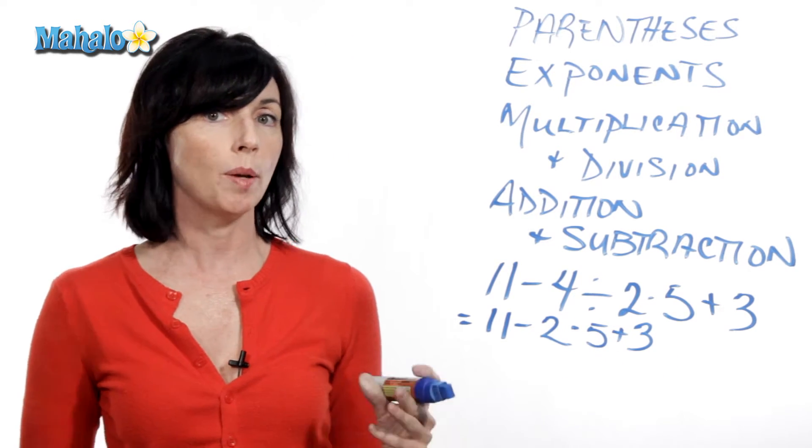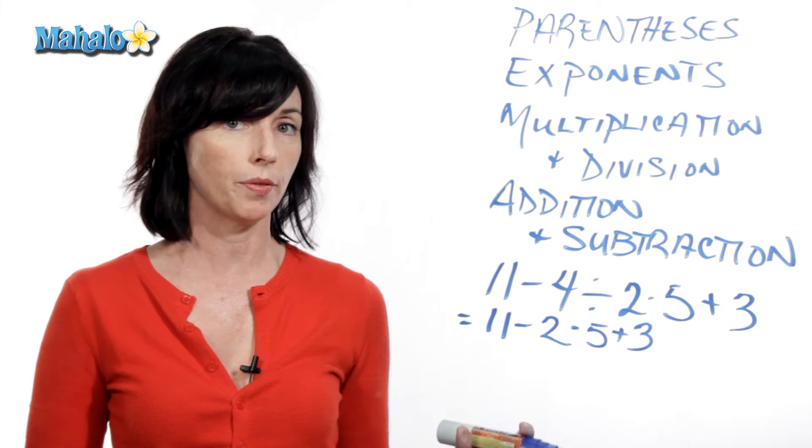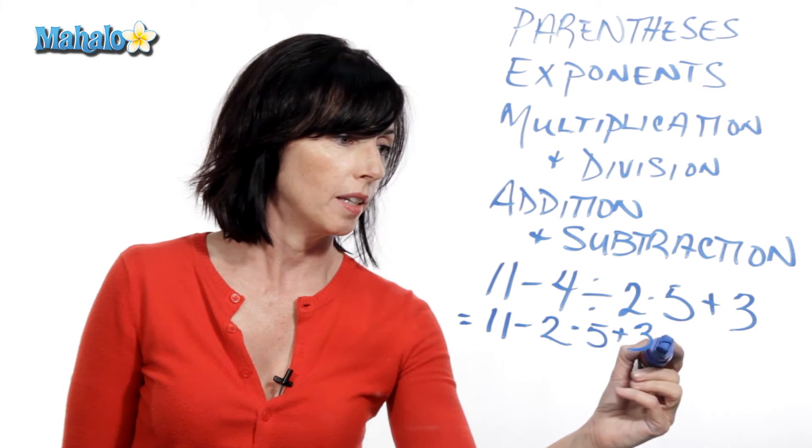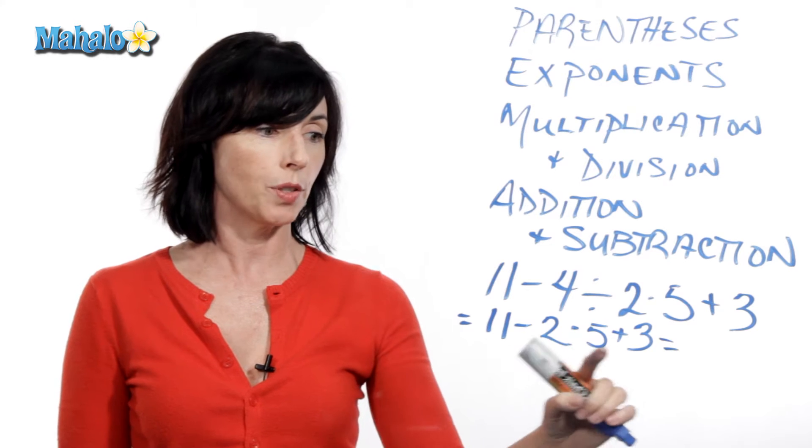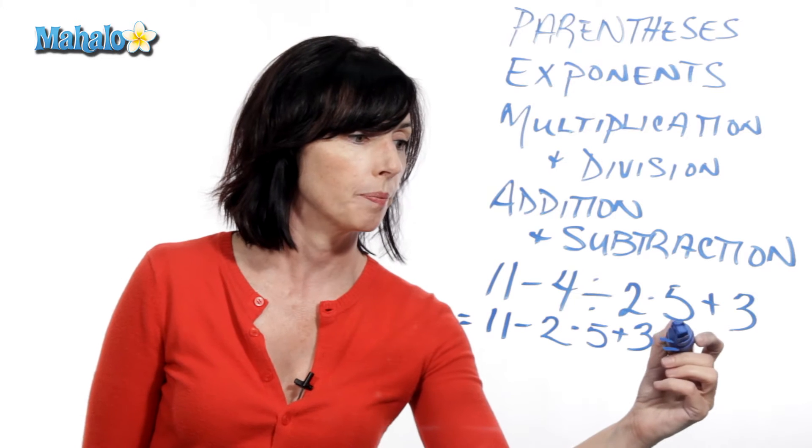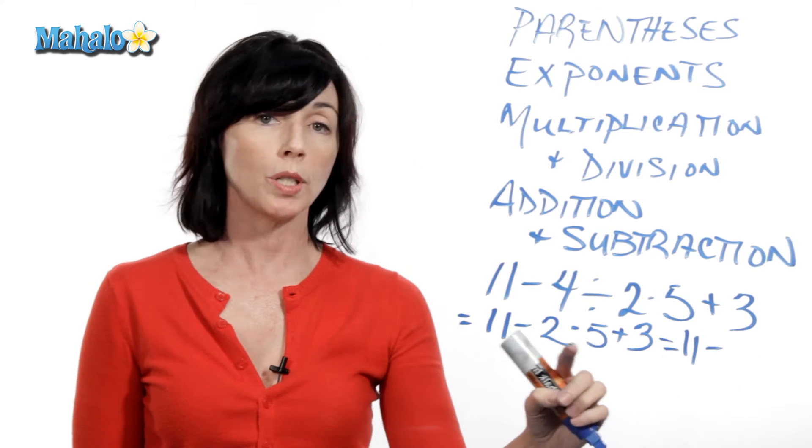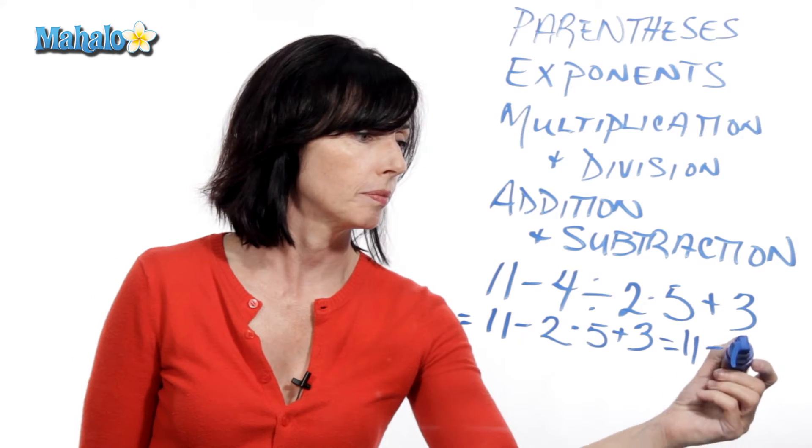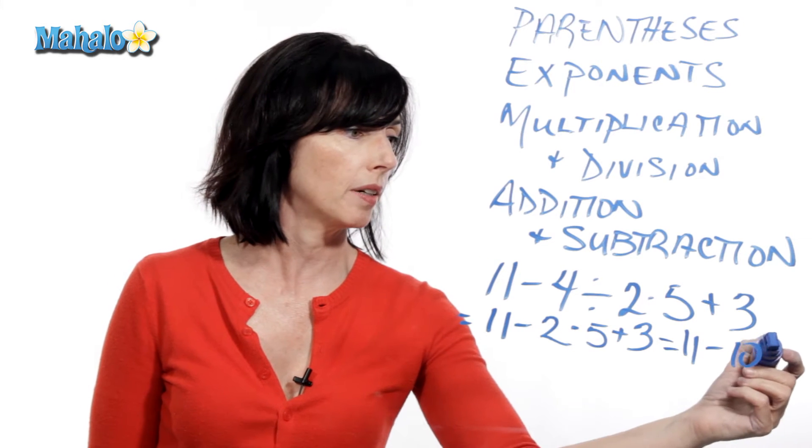So now I'm still doing multiplication and division from left to right. The next thing I have left to right is this multiplication here. So this becomes 11 minus 2 times 5 is 10, and then I still have my plus 3 here at the end.